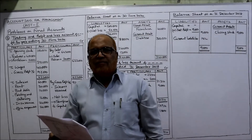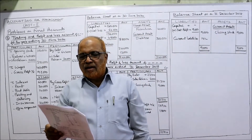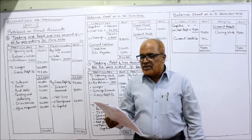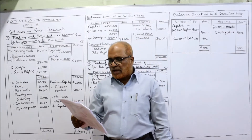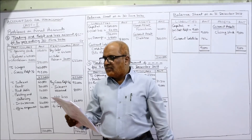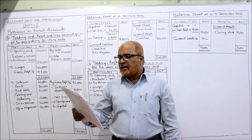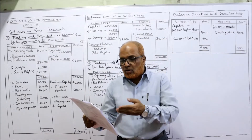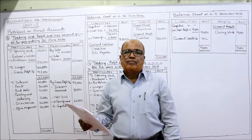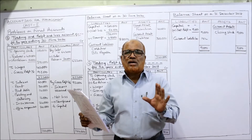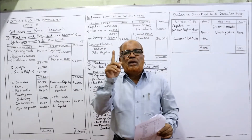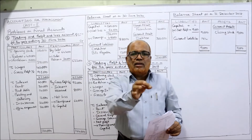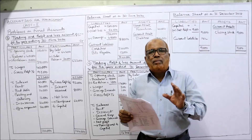Now see problem number five: prepare trading and profit and loss account for the year ended 30th June 2020, and a balance sheet as on that date, from the following trial balance. The total of the trial balance is 11,12,000. No adjustments are given — even closing stock is not given. Only trial balance items are given, so all items will appear only once, either in the trading account, profit and loss account, or balance sheet.